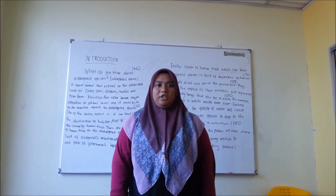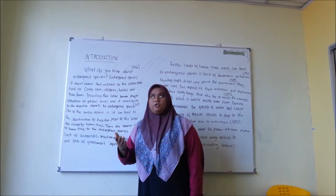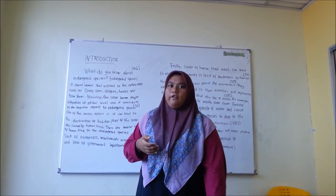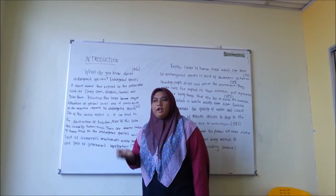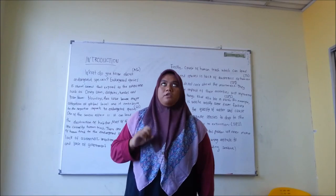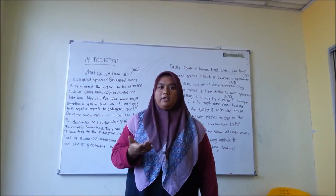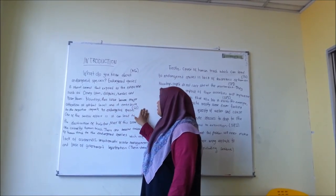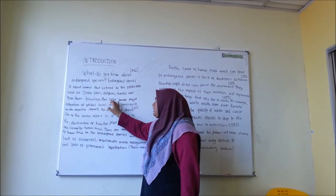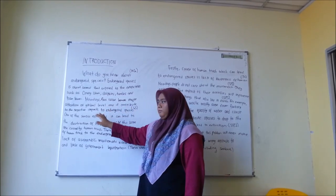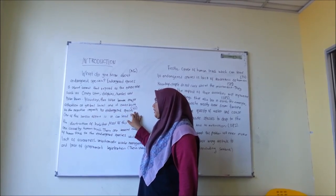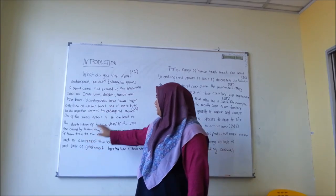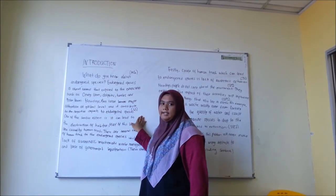After we write the attention getter, we have to write a general statement. The general statement must cover the minor cause and effect. For our group, we write about the major problem on the cause and effect. Our effect in the general statement is: nowadays, this issue has become a major concern at the global level, and it contributes to the negative impacts to endangered species. One of the serious effects is it can lead to the destruction of habitat.